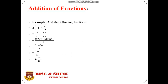Addition of fractions. Example: add the following fractions. We have two fractions — the first one is 2 whole 3 by 7, plus the second one is 4 whole 4 by 21. First we have to convert our mixed fractions into improper fractions, which we already learned in class 4th. The answer of the first fraction is 17 by 7 and the answer of the second fraction is 88 by 21. Now, since the denominators are different, we have to take the LCM of 7 and 21, which is 21.